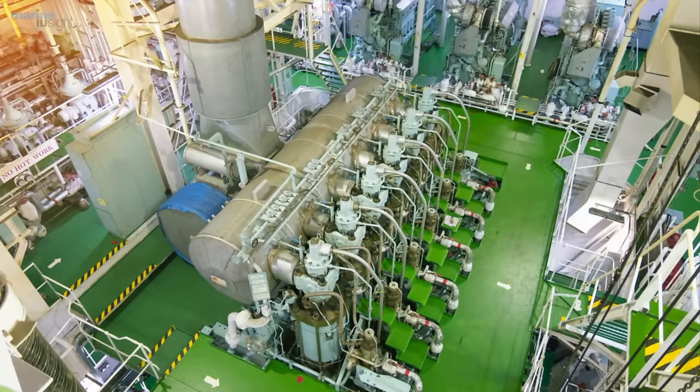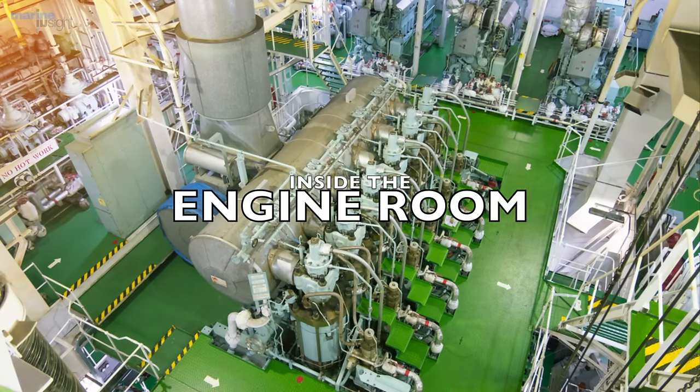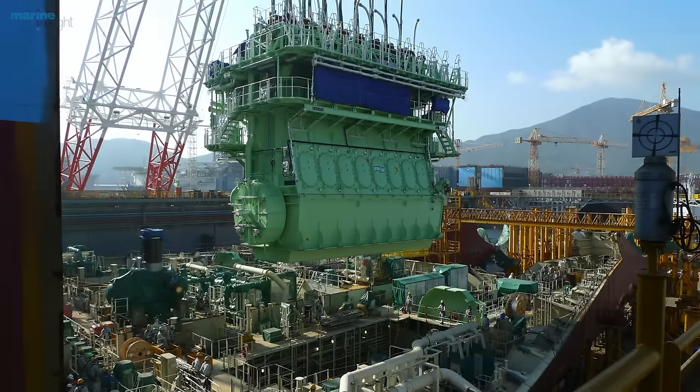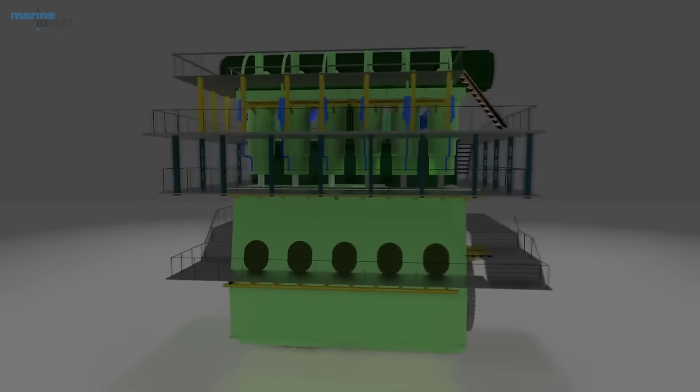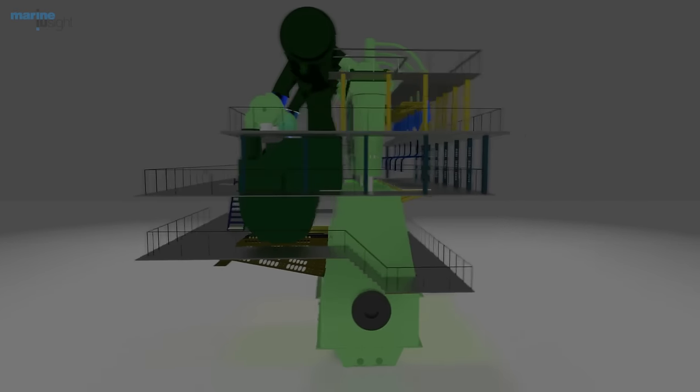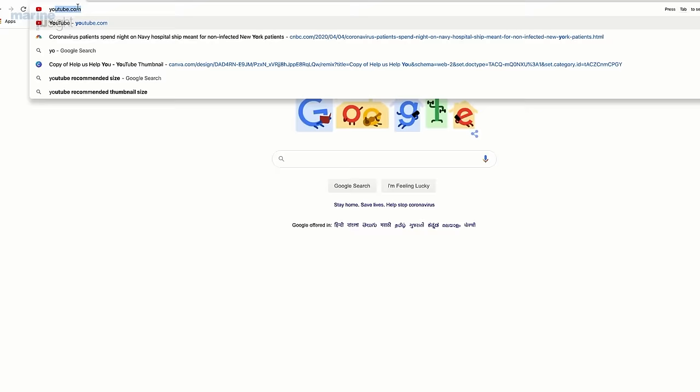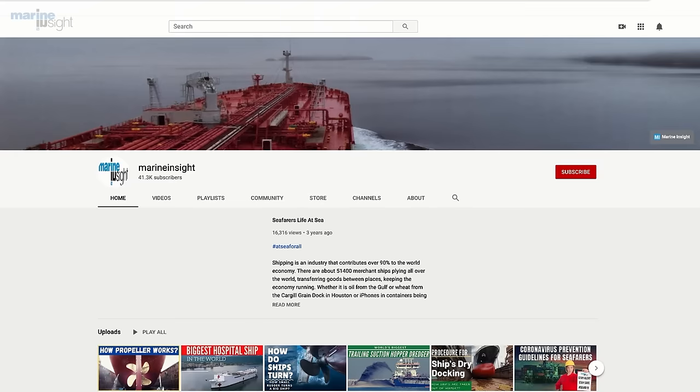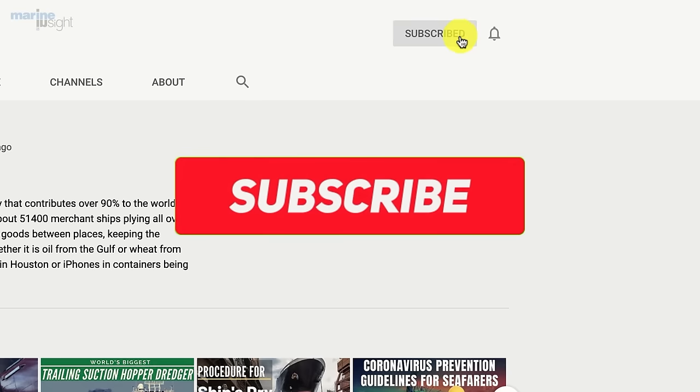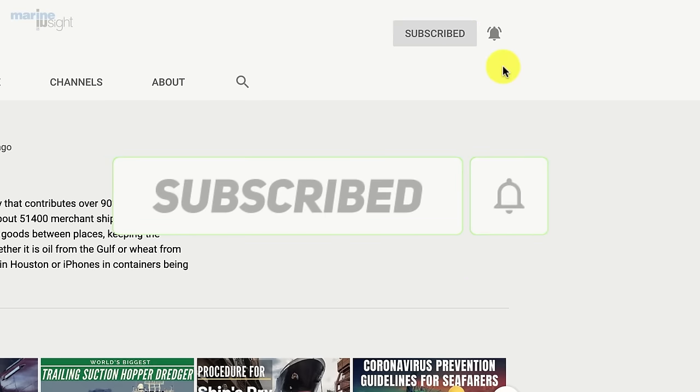You must have seen the engine inside the machinery room of the ship, covered and assembled with different other auxiliaries. Let's take it out from its installation and only concentrate on the main engine to understand its different parts. But before proceeding further, please do subscribe to our channel and press the bell icon to get notified when we post a video.